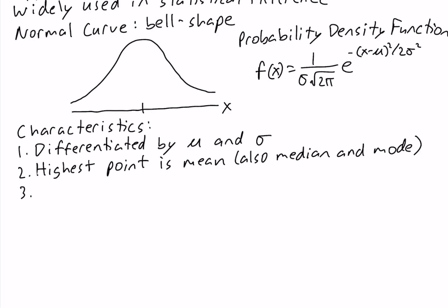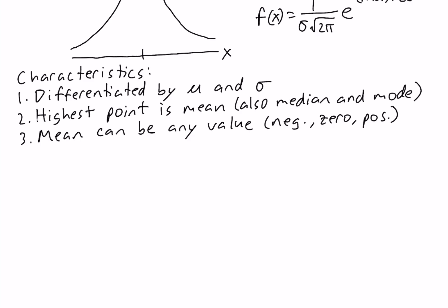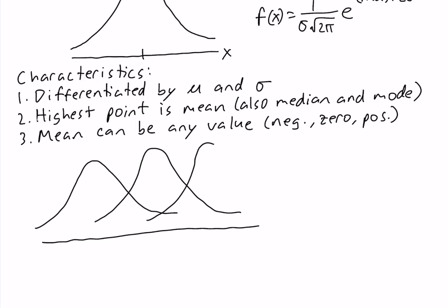The third characteristic of the normal distribution is that the mean can be any value — it can be negative, it can be zero, and it can be positive. For example, here are three normal distributions: the one in the middle has a mean of zero, the one on the left has a mean of negative 10, and the one on the right has a mean of positive 10.